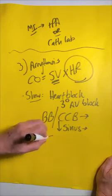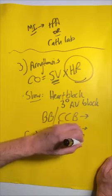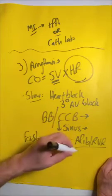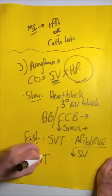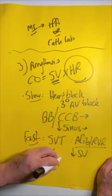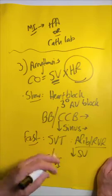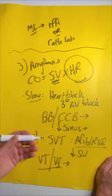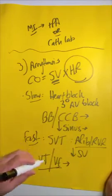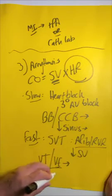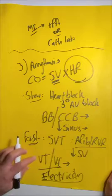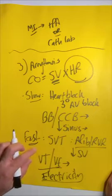We can also have problems if the heart goes too fast. These would be things like SVTs, afib with RVR. Here the heart can't fill properly, so we have a reduction in stroke volume. We can also have ventricular tachycardias or ventricular fibrillation, where the heart's not really moving at all. But when these patients are in shock, the only medicine you need to give is electricity. Shock these people early.